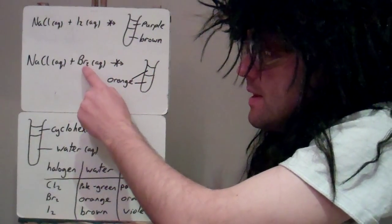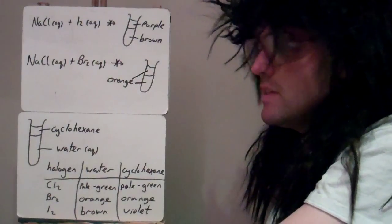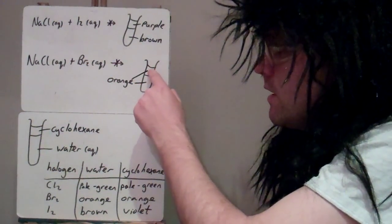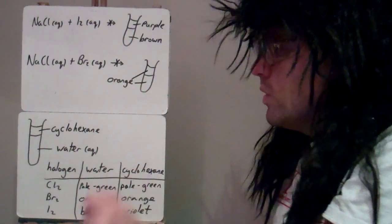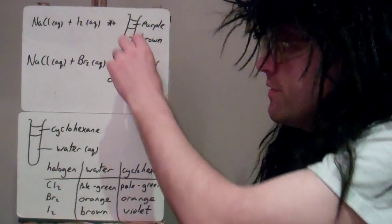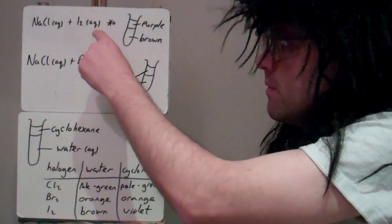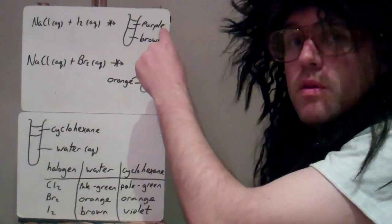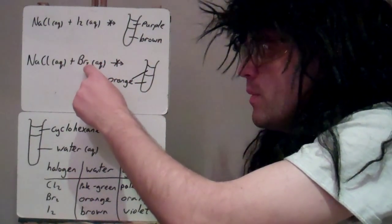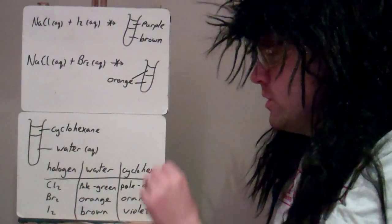Similarly, bromine is less reactive than chlorine, so the chlorine stays as the chloride and bromine stays as bromine — you see bromine in both the cyclohexane and water layers, both orange. We still see colours even though there's no reaction. If we know we've added bromine and we see orange, we know there's been no reaction.